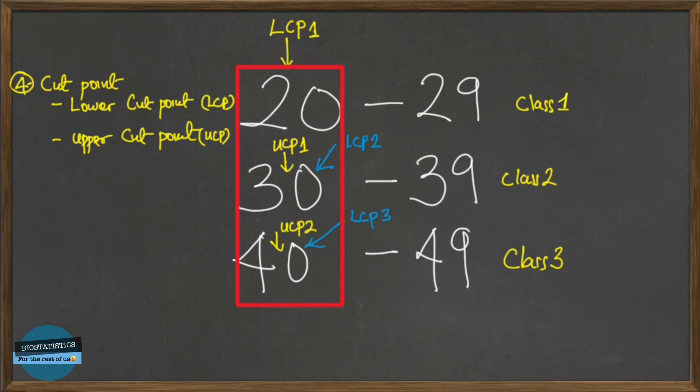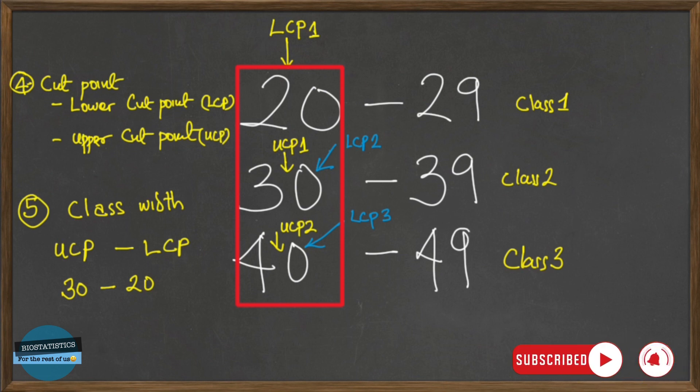The next terminology we'll be talking about is the class width. And for the class width, it's the difference between the lower cut point and the upper cut point. So the upper cut point for a particular class and the lower cut point for that class. So if we're looking at class 20 to 29, the class width is going to be 30 minus 20. So in relating this to the class interval, our class interval is 9, while our class width is 10.